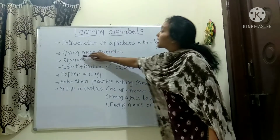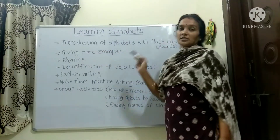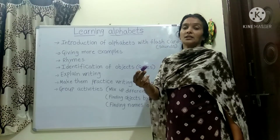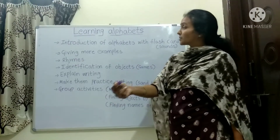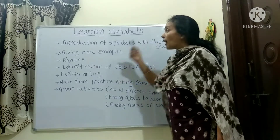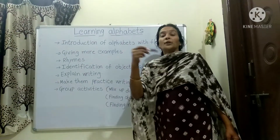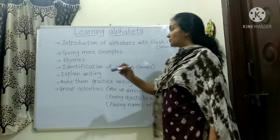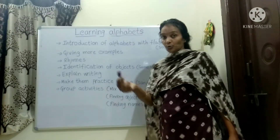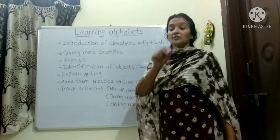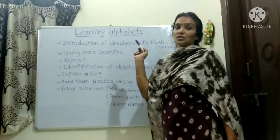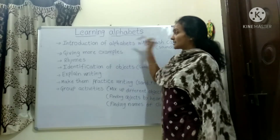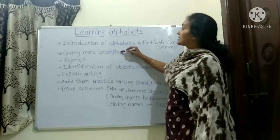After that, we give more examples through the sound — examples of the objects. Then after that, we ask the child to give some examples according to that sound, because the child hears many sounds. So we ask them to say some of the examples. That is the second step.